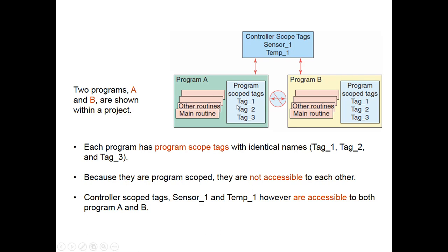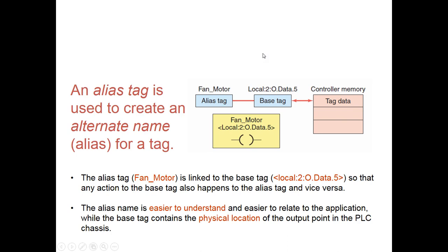Be aware that local tags cannot be shared with subroutines or the main. An alias tag is when you're creating a name for the IO — you come up with a tag name like 'fan motor' and give fan motor an address. Fan motor is the alias for the address. It's backwards from SLC 500s where you take the address and give it a name; here you have a name and give it an address. It's easy to remember 'fan motor' instead of, say, the second slot output on the fifth bit.